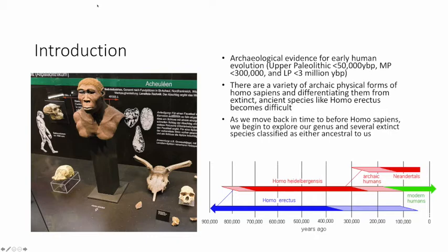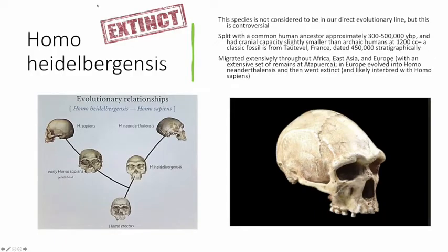These ancestral species in the genus Homo are the subject for today's lecture. Continuing back from the last lecture, we begin to talk about a species known as Homo heidelbergensis. This species is not considered to be in our direct evolutionary line, but it is controversial and people argue either way. It's clear that there was a split with a common human ancestor approximately 300,000 to 500,000 years before the present, and this particular species had a cranial capacity slightly smaller than the archaic humans we saw in that last lecture.